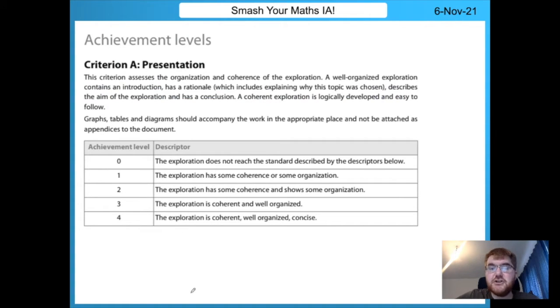Criterion A is about presentation. Make sure that you've got a content page, aim, rationale, and then the overall view of the mathematics IA and then conclusion logically developed. One thing that my students do struggle with is this idea of conciseness for the very top grade. The key thing here is to avoid repetition. Many of my students initially on their first draft will investigate something and then do exactly the same maths for two other situations. Not only will your IA be too long and you'll be marked down on this particular criterion, but also you're not showing other areas of mathematics that you are aware of. If you're going to use data from doing the same maths again and again, just show the results and then move on to some more in-depth analysis.